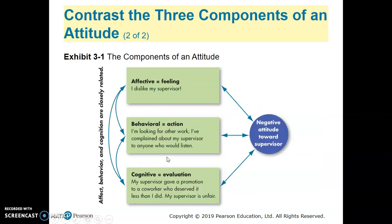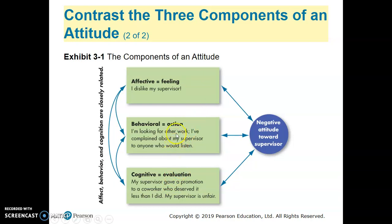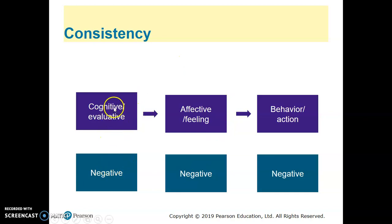According to the study, there is a theory called consistency. When we talk about affective, behavioral, and cognition, our attitudes need to be consistent. For example, if we have positive affective, we will have positive behavioral and positive cognition. If we have negative affective — negative feeling — normally our behavioral would also be negative and our evaluation would also be negative. So there is a consistency: if it is negative at the cognitive level, it will also be negative at the affective and behavioral levels.